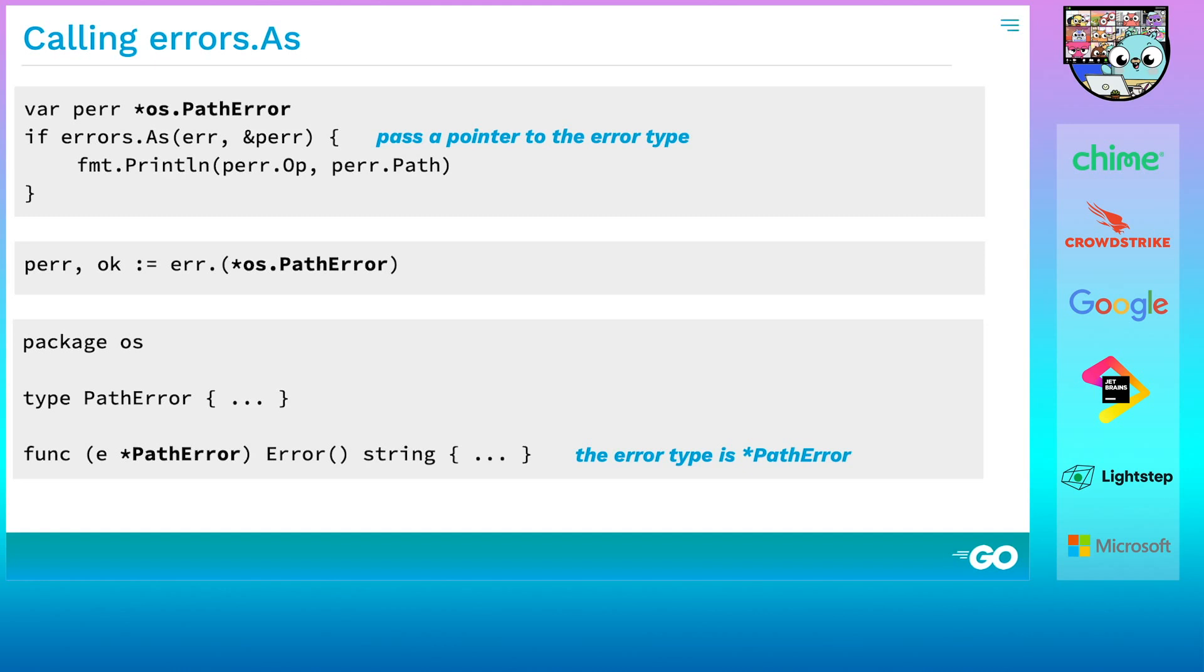At the top of the slide is a bit of the code from earlier, where we were looking for an os.path error. But let's be precise. What type exactly are we looking for? That is, what type implements Go's built-in error interface? The answer is pointer to os.path error. That's what you'd use if you were doing a type assertion on error, as the second box here shows. And that's what the definition of path error says in the third box. The receiver of its error method is a pointer to a path error. So what do we pass to errors.as? We need to pass a pointer to a value of the error type. We need a pointer so errors.as can assign to it. Are we taking a pointer to a pointer? Yes. Is that a bad thing? In this case, no. It's the right thing. Think of it as a pointer to the error type.